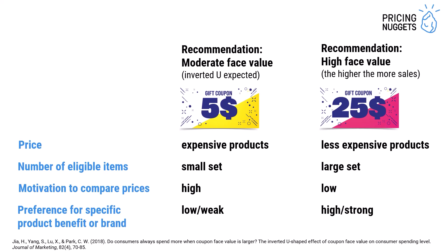Similarly, if the preference for a specific product feature, benefit, or brand is high, customers are less likely to switch to low-price alternatives. If this preference is high and strong, a higher coupon face value also increases sales. The opposite is true if the preference for specific benefits or brands is low or weak — then we are more likely to expect an inverted U relationship, and a higher face value actually leads to lower spending per transaction.